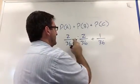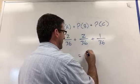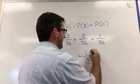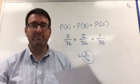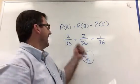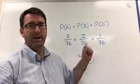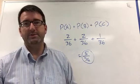So now we add all these up and we get 5 out of 36. And that's the probability for the combined event of getting either a 3, an 11, or a 12 on two dice.